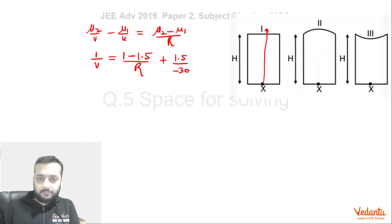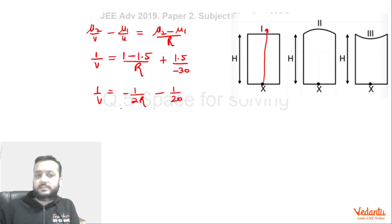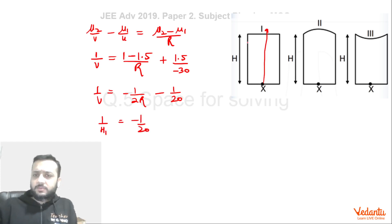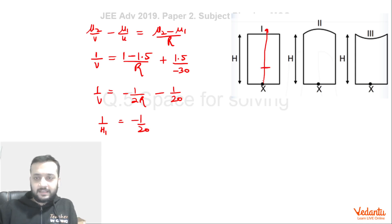Substituting into the formula gives 1/v = −0.5/2R − 1/20, which simplifies to −1/20 when R = ∞ (first case, flat surface). So 1/H1 = −1/20, meaning H1 = 20 cm. The minus sign simply indicates that the image forms on the opposite side relative to the direction of the incident ray — the magnitude of apparent depth is 20 cm. We put R = ∞ for the first case.